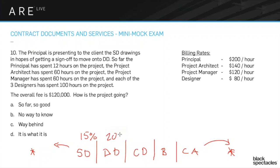Generally, the phase percentage breakdowns are: SD is about 15%, DD about 20%, CDs about 45%, bidding about 5%, and CA about 15%. These numbers aren't always exact, and with BIM and building information technologies, they're starting to shift. But right now, this is still how contracts are structured and how the exam thinks about it.